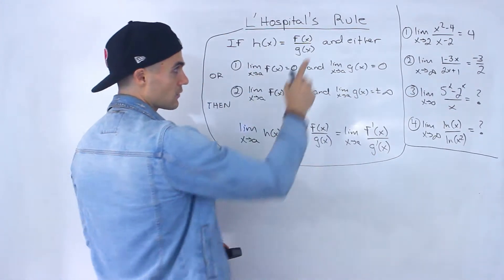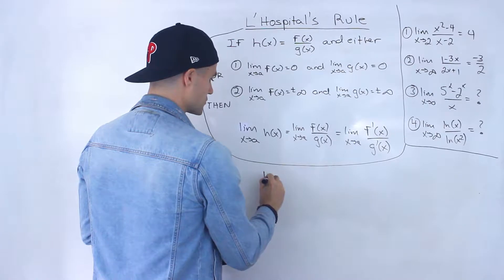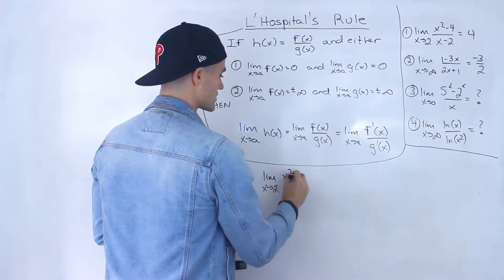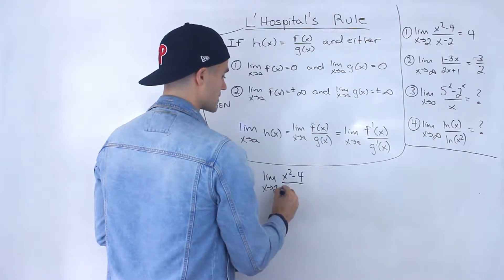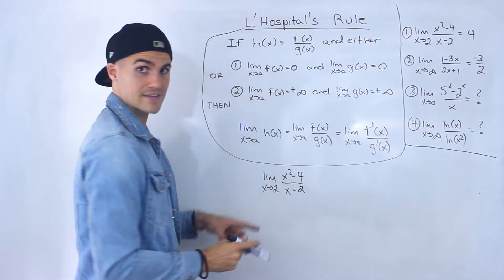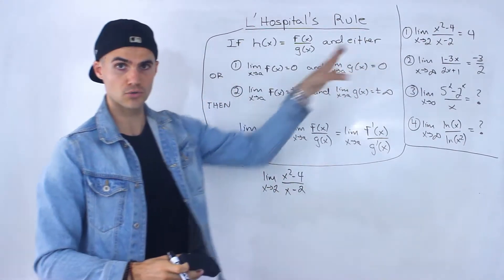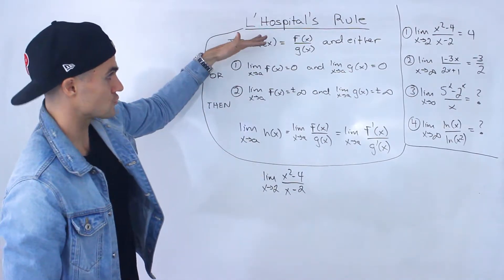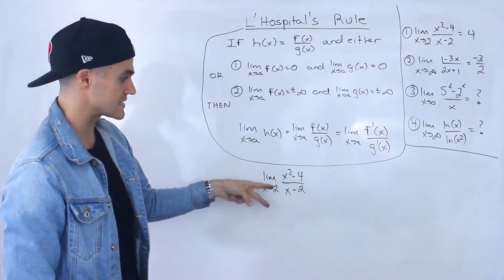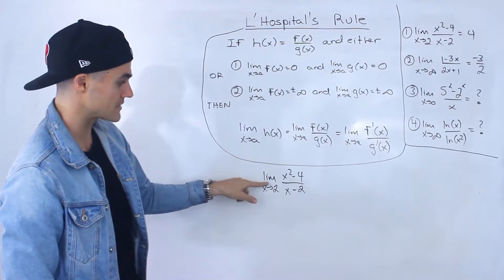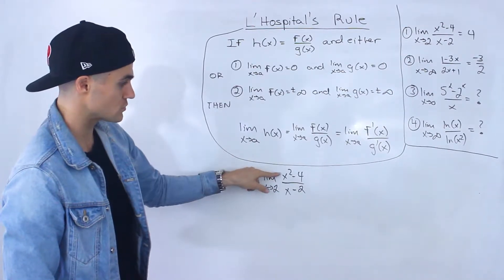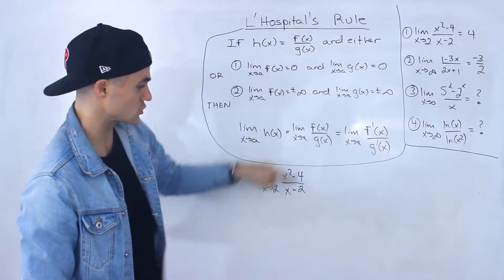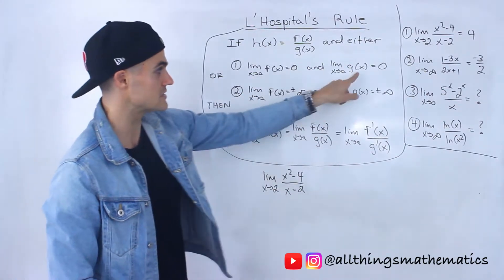Check this out. If we take the limit as x approaches 2 of (x² - 4) over (x - 2), we already know this limit equals 4 — I showed that with factoring earlier. But what if we apply L'Hôpital's Rule? Notice we can apply it because it's in that indeterminate form: the limit as x approaches 2 of x² - 4 is 0, and the limit as x approaches 2 of x - 2 is 0 as well.